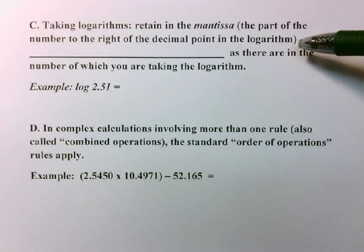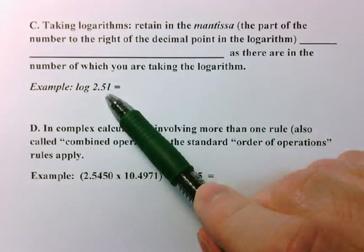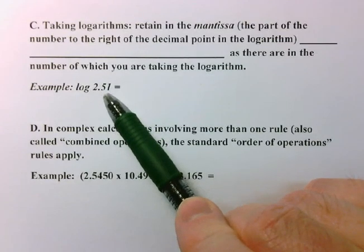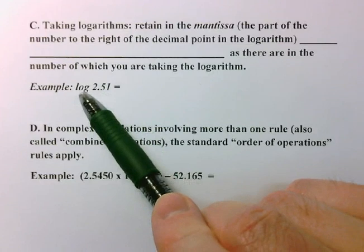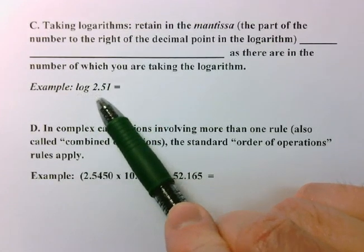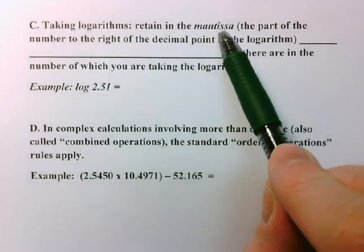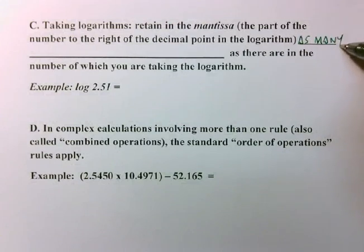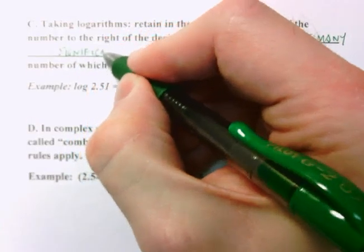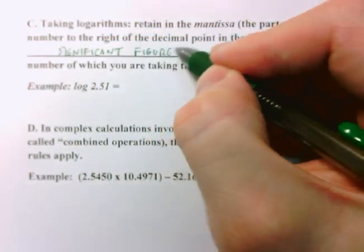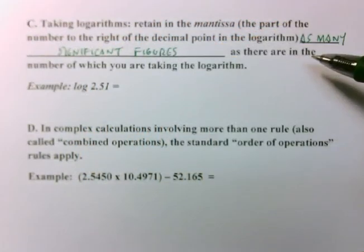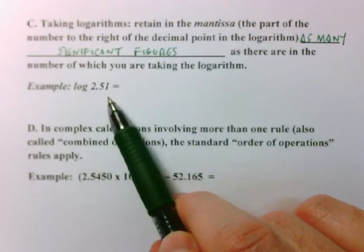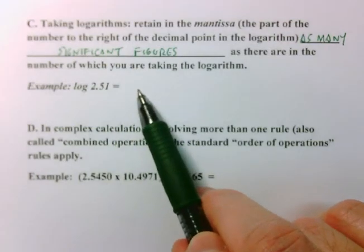And the rule generally for logarithms is that if you're asked to take the logarithm of a number, you will look at how many sig figs are in that number, in this case 3, and then when you put it into your calculator to take the log of that number, you will retain in the mantissa of your answer as many sig figs as there are in the number of which you are taking the logarithm. So I have 3 sig figs here, and when I get my answer, I want there to be 3 sig figs after the decimal.